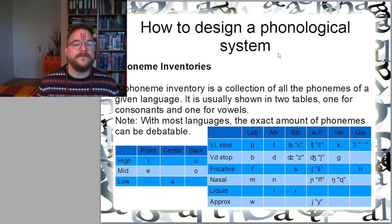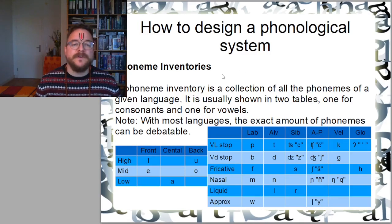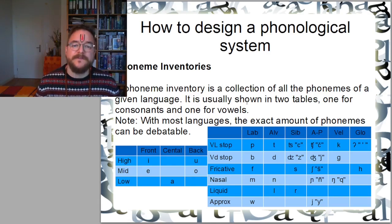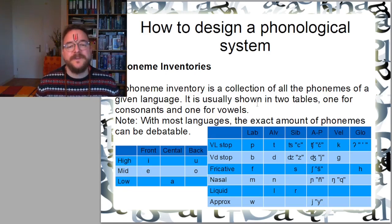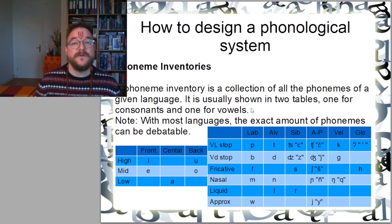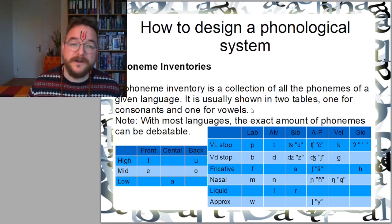I already mentioned the word phoneme inventory. A phoneme inventory is a collection of all the phonemes of a given language. It is usually shown in two tables. One is the table for vowels and the other one is the table for consonants. With most languages the exact amount of phonemes can be debatable. So sometimes there's phonemes that only appear in certain words, in foreign words or in certain dialects.